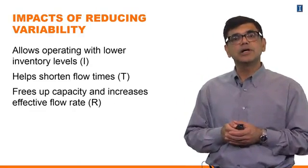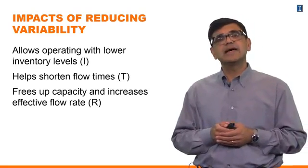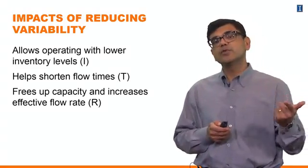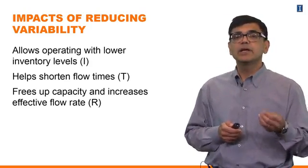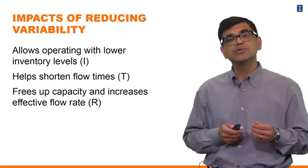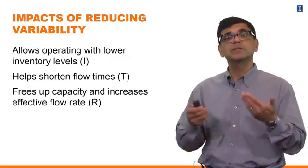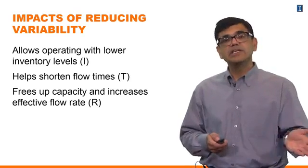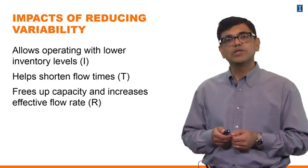If you can reduce your variability and think about the impact on the three metrics of Little's Law — inventory, throughput time, and throughput rate — reducing variability allows you to work with lower levels of inventory, results in shorter flow times, and frees up capacity so you can make more to sell to customers. Variability can affect all three aspects of Little's Law.